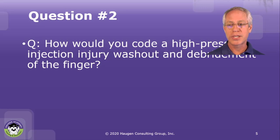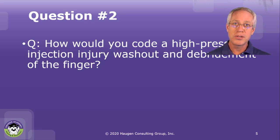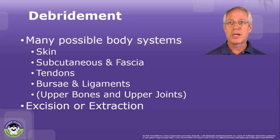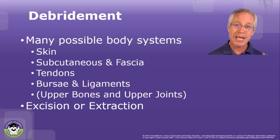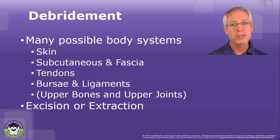Question number two: how would you code a high-pressure injection injury washout and debridement of the finger? A high-pressure injection injury is where a paint gun, grease gun, or high-pressure washer cuts a hole through the skin and deposits a high-pressure substance beneath the skin and subcutaneous tissue — unfortunately often in the hand — requiring opening of the tissue to clean out the substance and cut out any devitalized tissue, lest it become necrotic and infected. In the hand, it's almost always an excision — a very tedious and conservative debridement of just the damaged tissue. It's not likely you would have an extraction, just a scraping out of tissue, so mostly look for excision, but consider extraction.